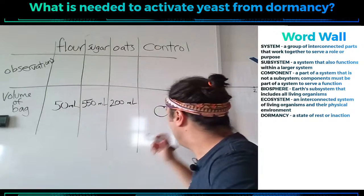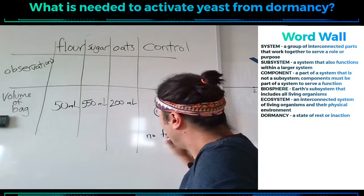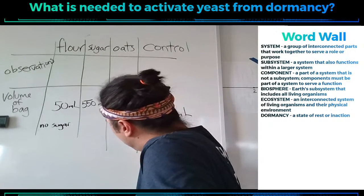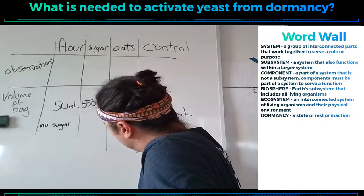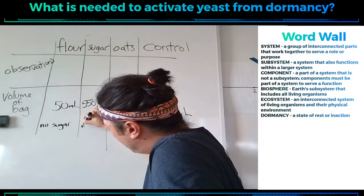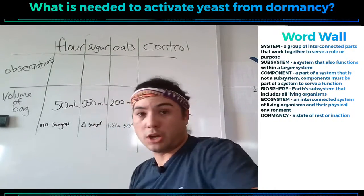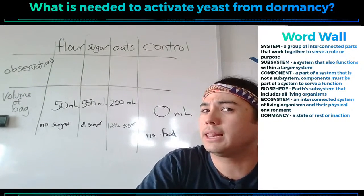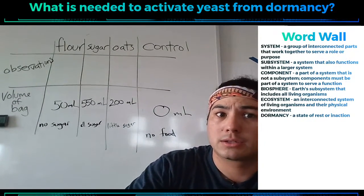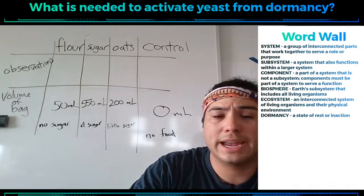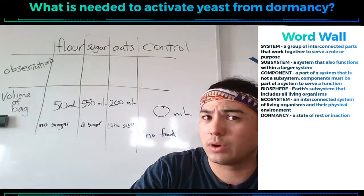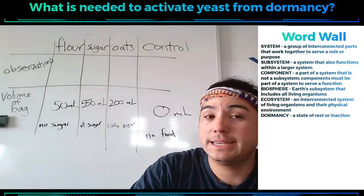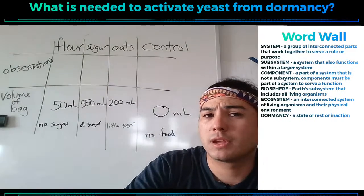So: no food was the control, flour gave us 50 milliliters, oats had a little bit of sugar and gave us 200 milliliters, and pure sugar gave us 550 milliliters. Taking a look at our data — is there a conclusion? Is there a claim we can draw to answer what is needed to activate yeast from dormancy, and what kind of food, in particular what food ingredients, do yeast prefer? Are we seeing any sort of connection here?